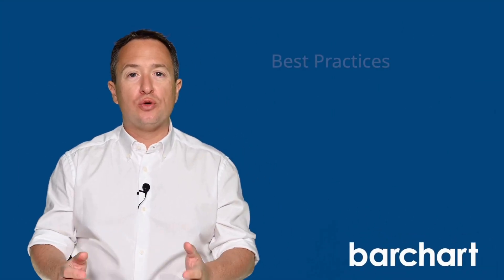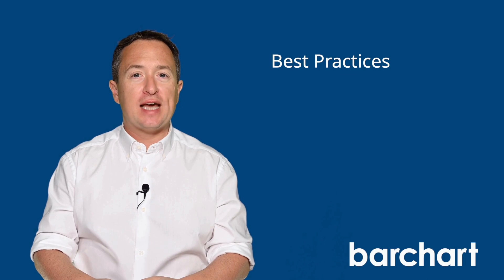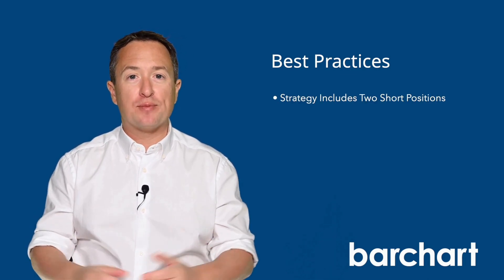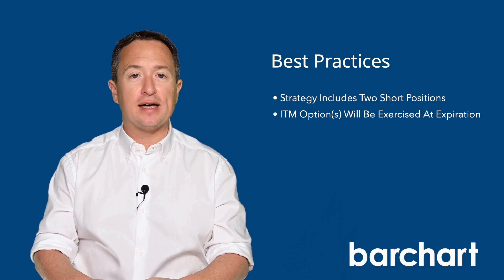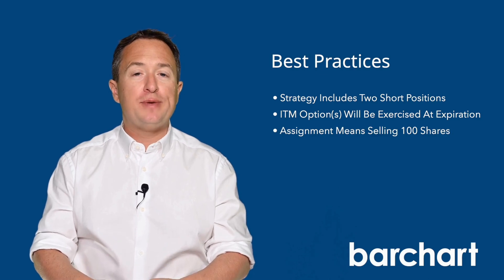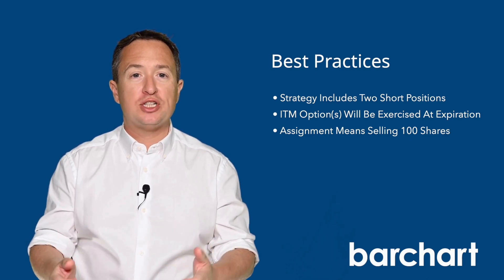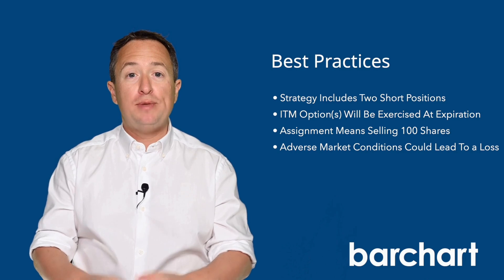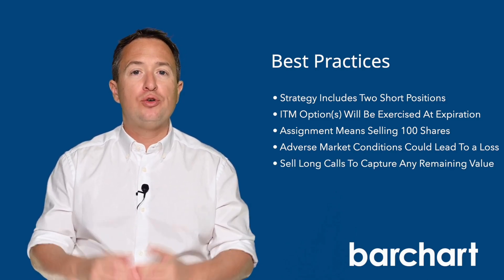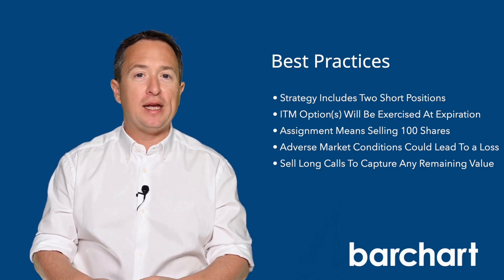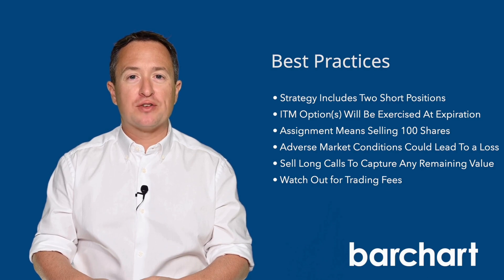It's always a good idea to close your positions right before expiration when using any strategy that requires writing or selling options. For this example, you have two short positions in the trade at the same strike price, and if they're in the money by expiration, the option will be automatically exercised — or from your perspective, you'll be assigned. If any of the short calls do get assigned, you'll be obligated to sell 100 shares of stock for every contract you wrote. This means you might need to purchase the shares at the current market price, which could be higher than the strike price, and then sell them at the strike price, potentially resulting in a loss. You can also sell your long call positions to capture any remaining value, which will help mitigate some of your losses. But keep an eye out for trading fees, as they might make buying shares from the market preferable.